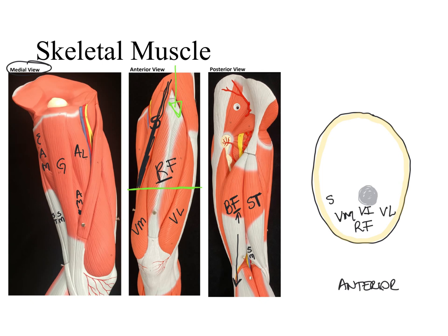In the posterior aspect of the thigh we see the biceps femoris, always lateral — on the same side as the vastus lateralis. We have the semitendinosus on top of the semimembranosus — these are our hamstring muscles. On the medial side we find the gracilis, the adductor longus, and the adductor magnus.